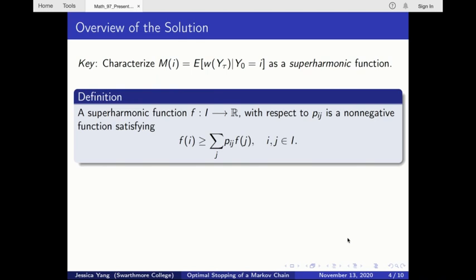Here's the definition. A superharmonic function has the property that, given any state i, the function's value at i is always greater than or equal to the transition probability weighted average of the function's value at any subsequent state j.